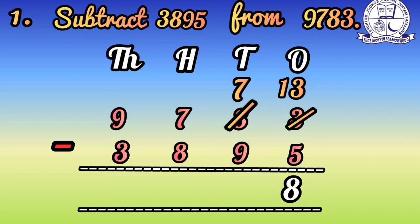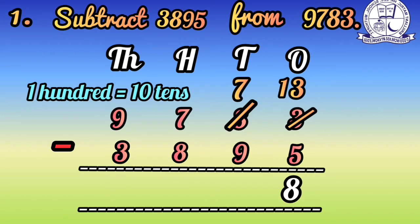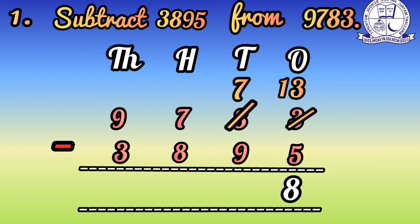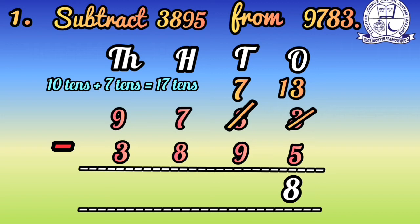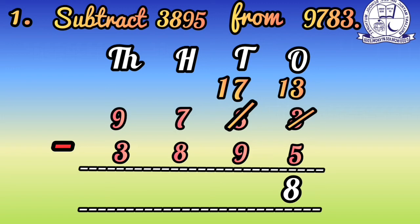Next is the tens place. In the tens place we have 7 and 9. Since 9 is bigger than 7, we cannot subtract directly. We need to borrow 100 from the hundreds place. We give 10 tens to the tens place. Adding the borrowed 10 tens to the existing 7 tens gives us 17 tens. So 17 minus 9 equals 8. Write 8 in the tens column.